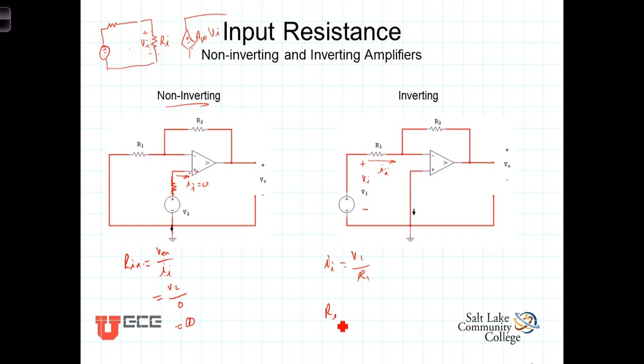So RN is equal to the input voltage, which is V1, divided by IN. Well, this then is equal to V1 divided by IN, which is V1 divided by R1. Dividing by a fraction, you invert and multiply, the V1's cancel, and we see that the input resistance is simply R1.